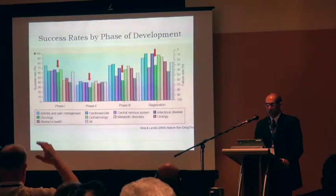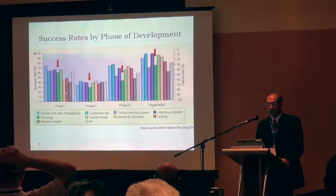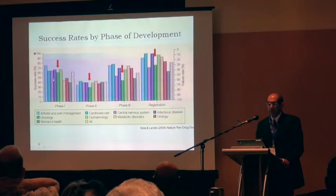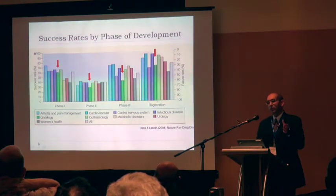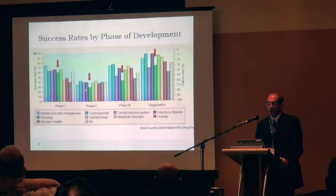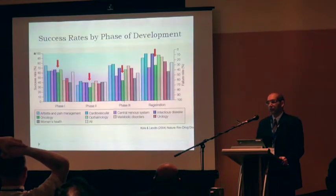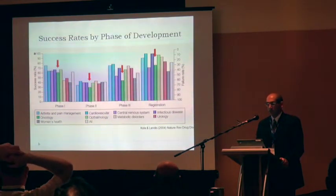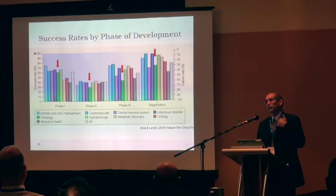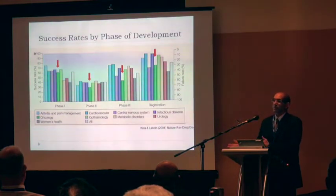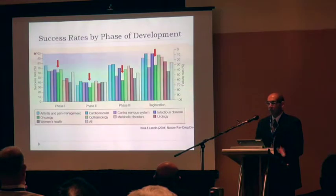If you look at attrition by phase, the success rate at phase one — meaning compounds that enter phase one and successfully get into phase two — is about 60–70% across therapeutic areas. In phase two, the success rate obviously drops down, and failures are primarily based on efficacy. And importantly, even after completing phase three registration, in oncology you only have a success rate of about 70%, meaning even after spending all that money you still have a chance of failure. So there are places for improvement in all phases.